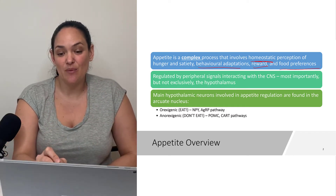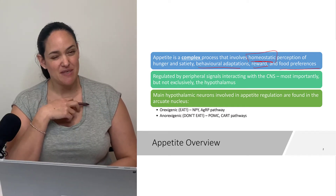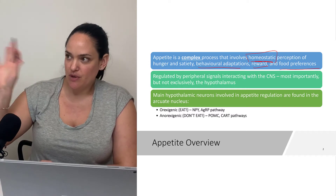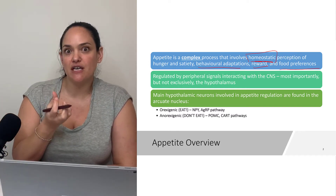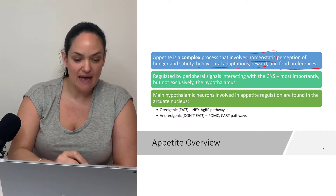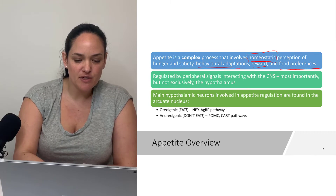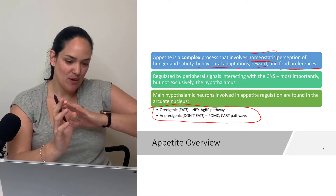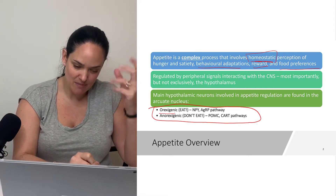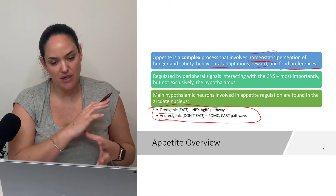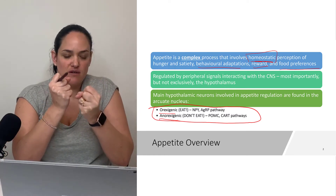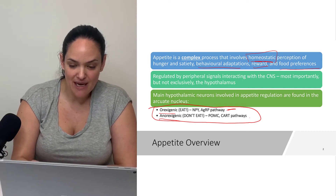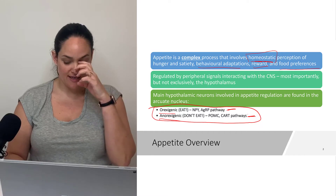Ideally, all of that is working in balance and we have more of a homeostatic regulation of appetite, but some signals can override these as well. Before we get into what can mess with some of these signals, I want you to understand the circuitry of the arcuate nucleus of the hypothalamus. In particular, we're going to look at two pathways: what I like to call the eat pathway and the don't eat pathway — or the orexigenic pathway and the anorexigenic pathway — and this dual control of appetite based on these two pathways.